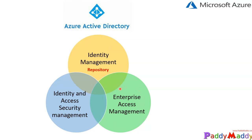Now let's understand enterprise access management. For example, a finance application should only be accessible to the finance team — that's where enterprise access management features come in. Similarly, an HR application is only for the HR team. Additionally, your application should automatically log in if the user is already logged into their machine, using the single sign-on option. Enterprise access management is essentially about controlling access.